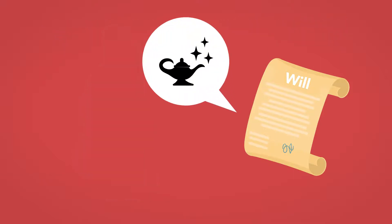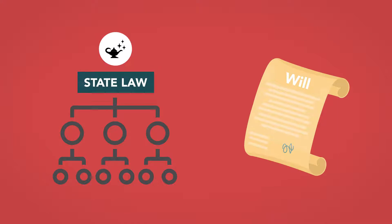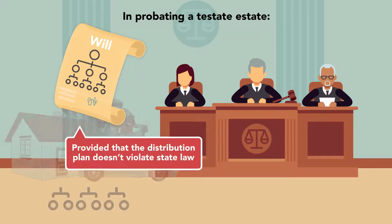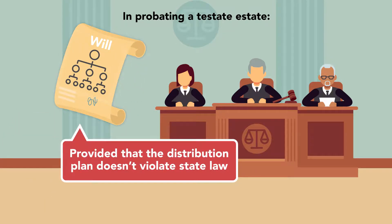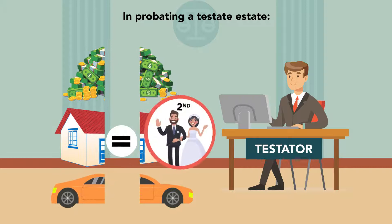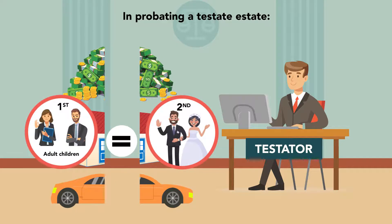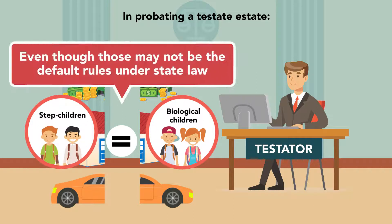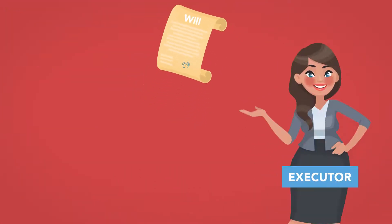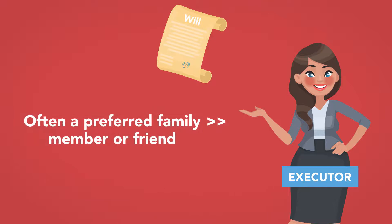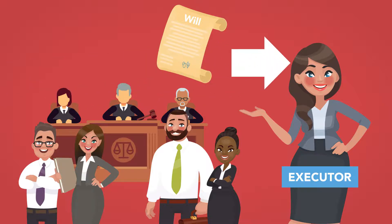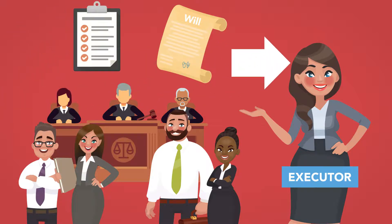Dying testate allows a person's wishes to be known and followed within the framework of state law. In probating a testate estate, a court will direct the distribution of the testator's property as specified in the will, provided the distribution plan doesn't violate state law. For example, a testator may specify that his property is to be split equally between a spouse from a second marriage and adult children from a first marriage, or between biological children and stepchildren, even though those may not be the default rules under state law. In addition, a will usually nominates someone to serve as executor of the estate, often a preferred family member or friend, who will be given preference by the court over other candidates, so long as she meets basic requirements of competence.